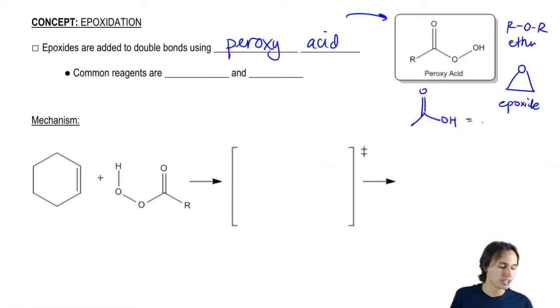So remember that the definition of a carboxylic acid is CO2H. That's the condensed formula.